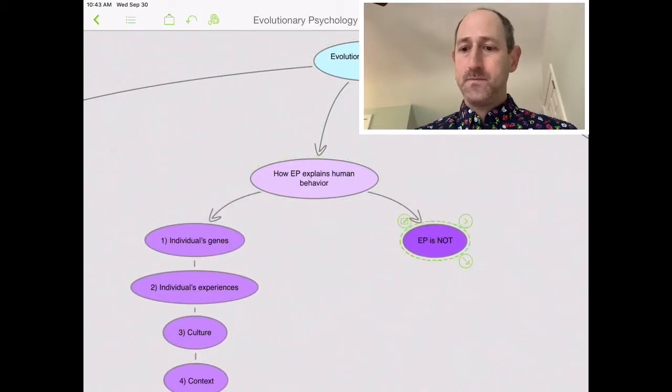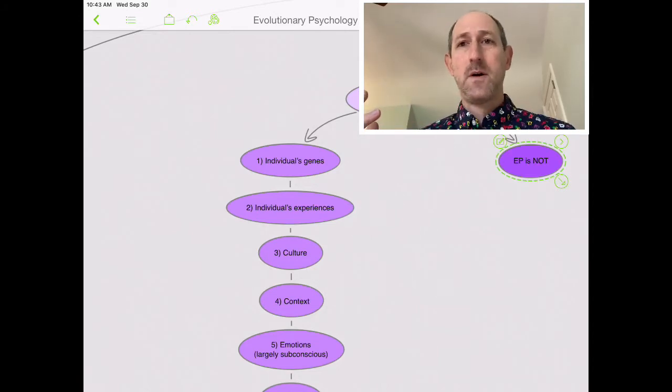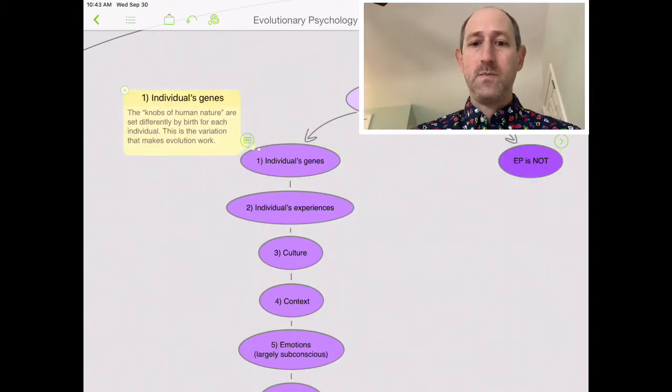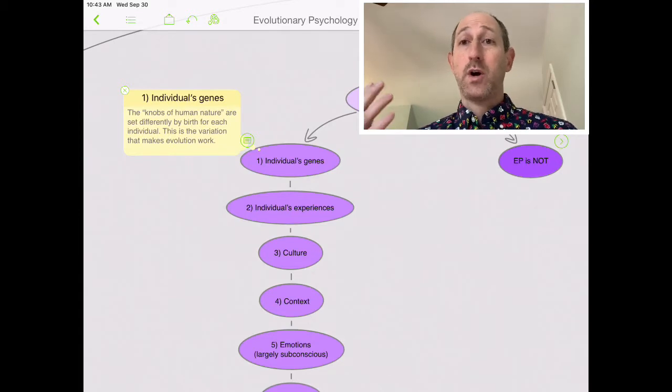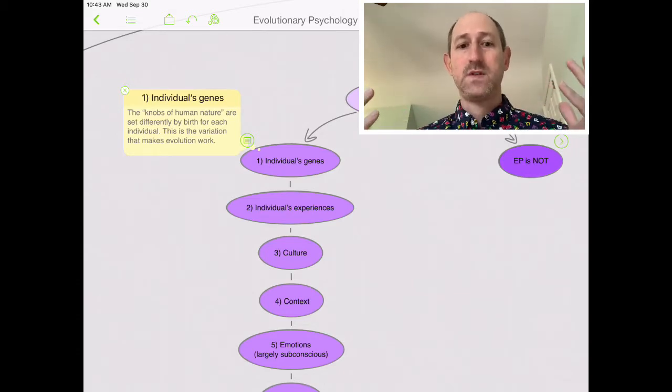Let's begin with an individual's genes. We're going to talk in another lecture about where this stuff comes from. But each individual does have what we're going to call in this class and what Robert Wright calls in his book, the knobs of human nature. The knobs of human nature are sort of our universally evolved psychological mechanisms or tools. Each of us has these knobs, if you will.